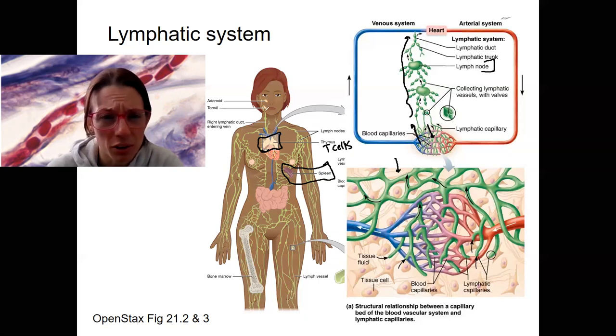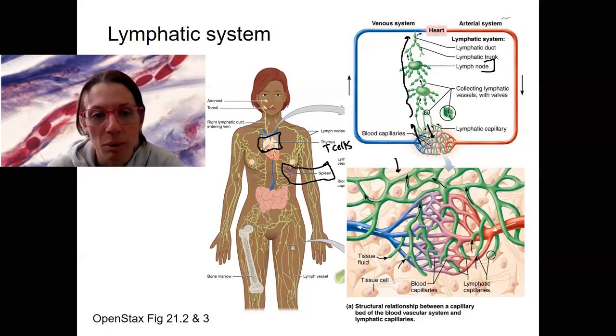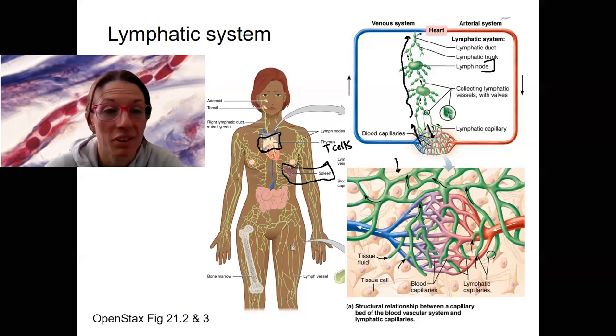Tonsils you may have heard of — they actually contain lymphatic tissue. However, people also have the tonsils removed and don't seem to have any altered immune function.